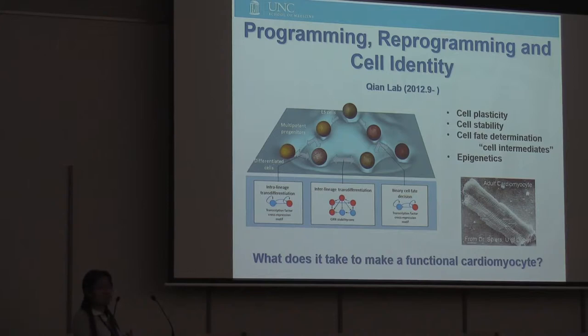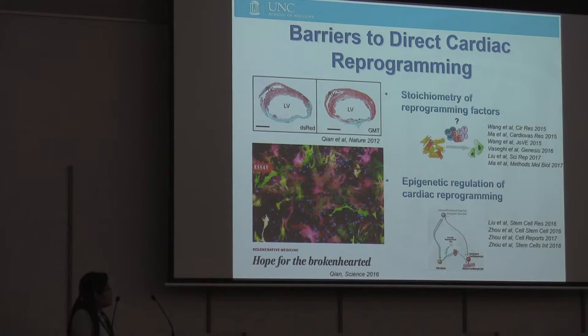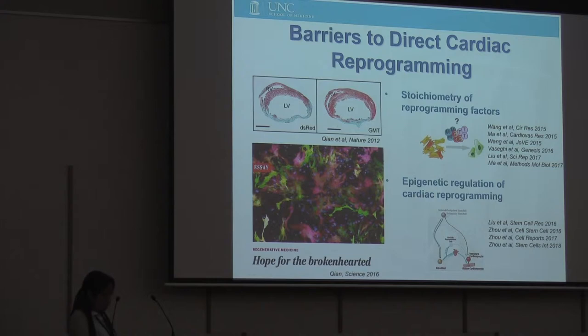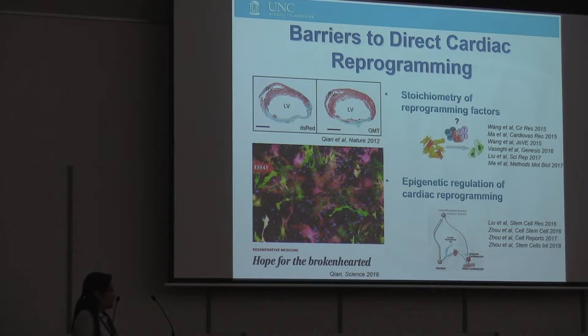During my first four to five years as a junior faculty, we built upon our early studies where we demonstrated endogenous cardiac fibroblasts can be converted into cardiomyocyte-like cells, and really leveraged knowledge from developmental biology to characterize the stoichiometric requirement of the reprogramming factors, and also studied epigenetic regulation. In particular, I identified the epigenetic barrier to cardiac reprogramming, and my previous postdoc Yang Zhou, who is currently an assistant professor at UAB and also at this meeting, did most of the work for the epigenetic characterization — so she's the expert, feel free to talk to her.